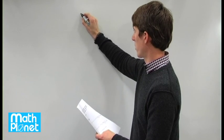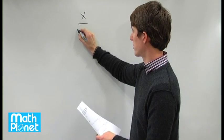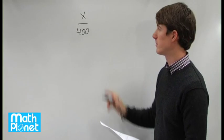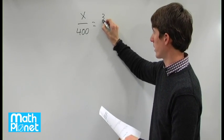So we have the ratio x to 400, which can be written as a fraction like this, is equal to the ratio of 3 to 5.